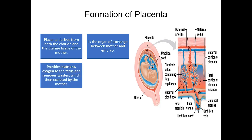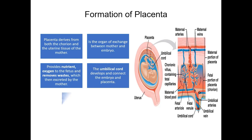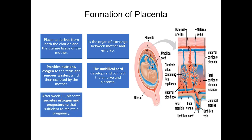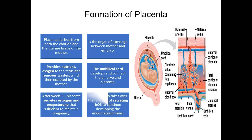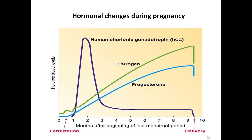The placenta provides nutrients and oxygen to the fetus and removes waste from the fetus, which is then excreted by the mother. The umbilical cord develops and connects the embryo to the placenta. After week 11, the placenta secretes estrogen and progesterone to maintain the pregnancy, and also takes over the function of secreting hCG to continue developing the endometrium layer. The graph shows hormonal changes throughout pregnancy. For the first trimester, hCG blood levels spike as the implanted blastocyst secretes this hormone to signal its presence, maintaining the secretion of estrogen and progesterone by the corpus luteum. Some hCG passes into urine where it can be detected by early pregnancy tests.